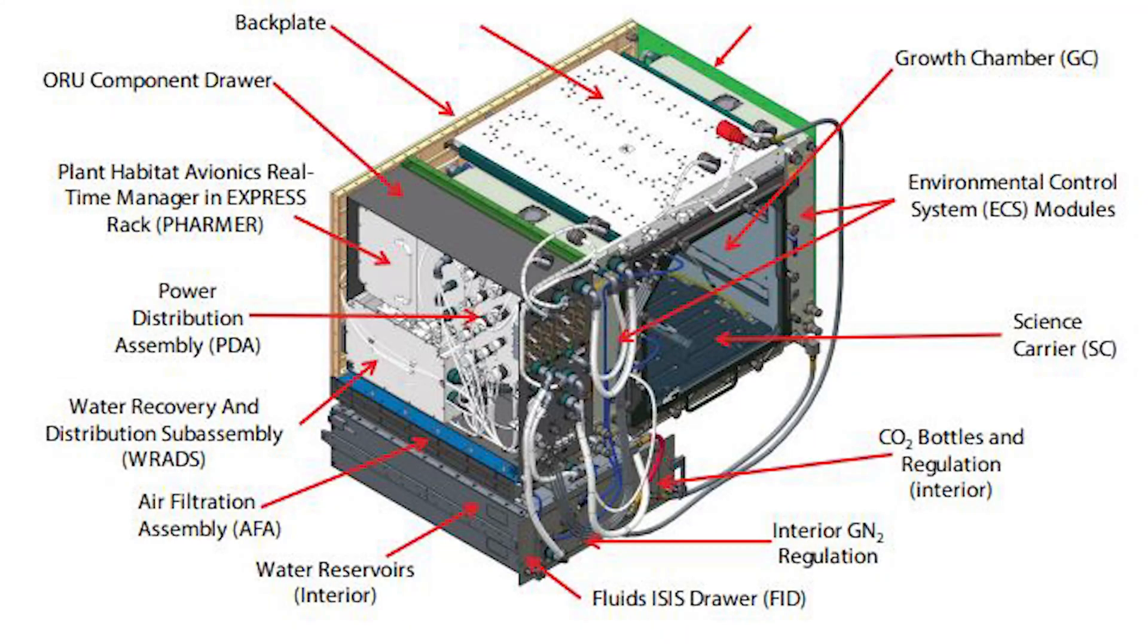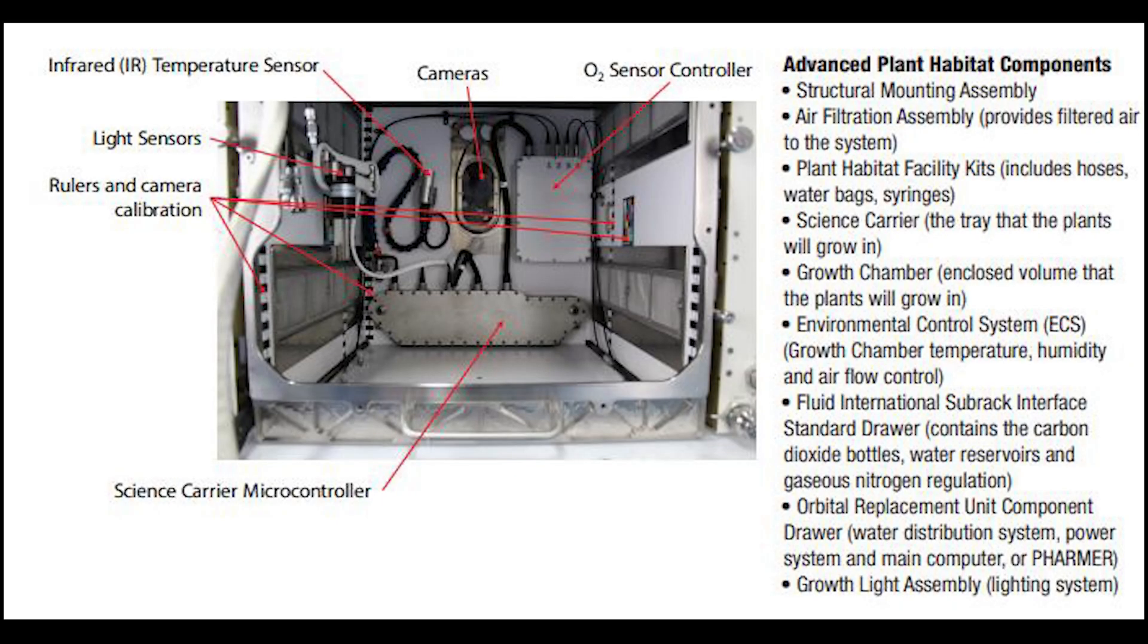There's several main parts to the unit. One of the biggest and most notable ones is the growth chamber. The growth chamber provides all the volume for the plants to be able to grow and the experiment to be carried out. Because it's an environmental chamber, you don't necessarily have to grow plants in it.